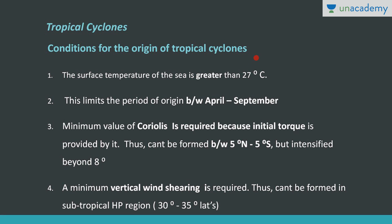The conditions required for the origin of tropical cyclones are: first, sea surface temperature should be greater than 27 degrees Celsius. That is why these cyclones are limited to the period between April to September. A minimum value of Coriolis force is required because initial torque is provided by Coriolis force. That is why these cyclones are not found in equatorial regions, that is between 5 degrees north to 5 degrees south, where Coriolis force is zero. These cyclones are intensified beyond 8 degrees north and south where there is significant Coriolis force.